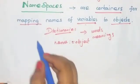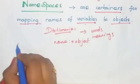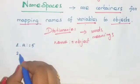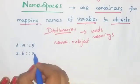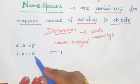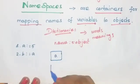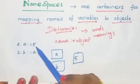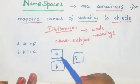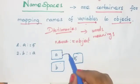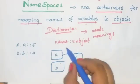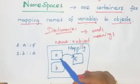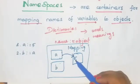Let's see one example. Write the statement: A is equal to 5. Second statement: B is equal to A. Draw the mapping for these statements. In the first statement, A is first mapped to the integer 5 — so A is mapped to integer 5. Here A is a variable and the integer value 5 is the object.